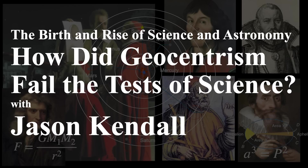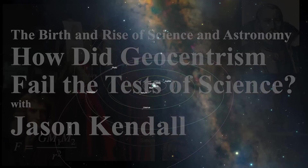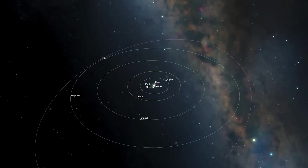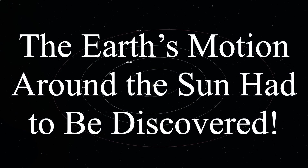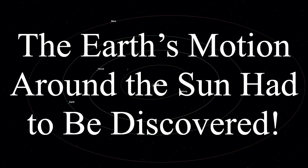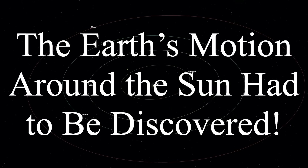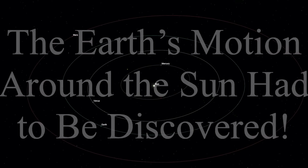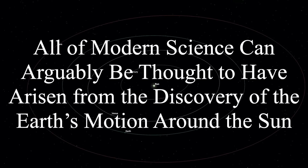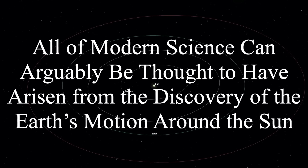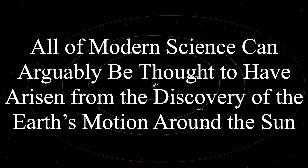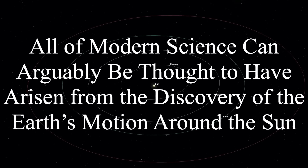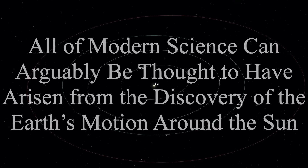Today we're going to be talking about the motions of the planets around the Sun. That the Earth actually goes around the Sun is one of the central ideas to all of physics and frankly modern thought. The discovery of the Earth's motion around the Sun and the development of thought that led us to that are probably some of the most important things in Western thinking, and in fact it traces the beginnings of what we call science.